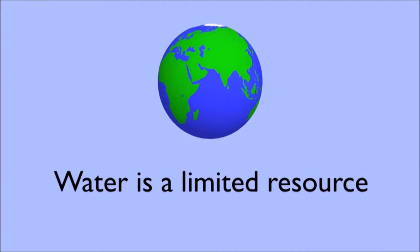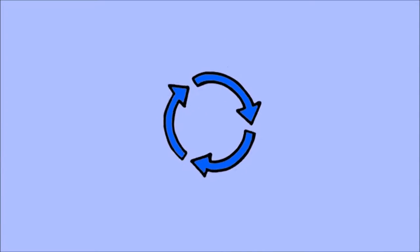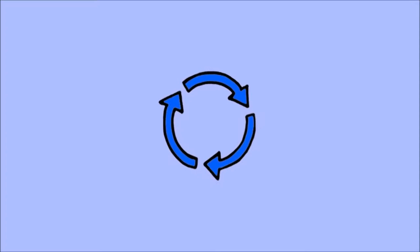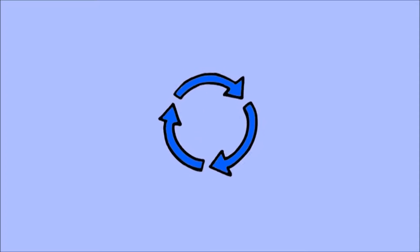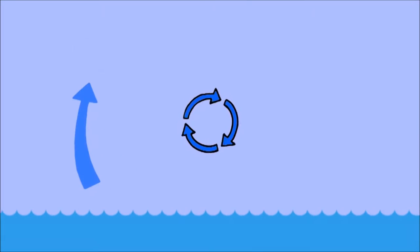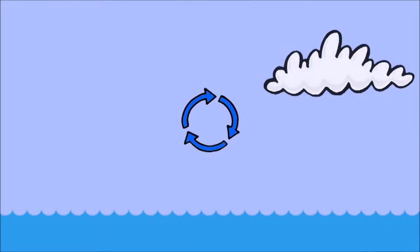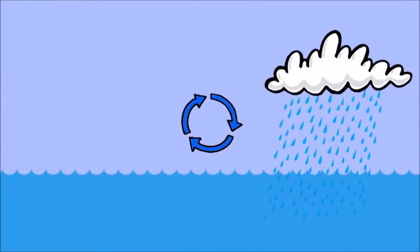It's continually being cycled around in something called the water cycle. The water cycle has a few main parts. They include evaporation, condensation, precipitation, and collection.